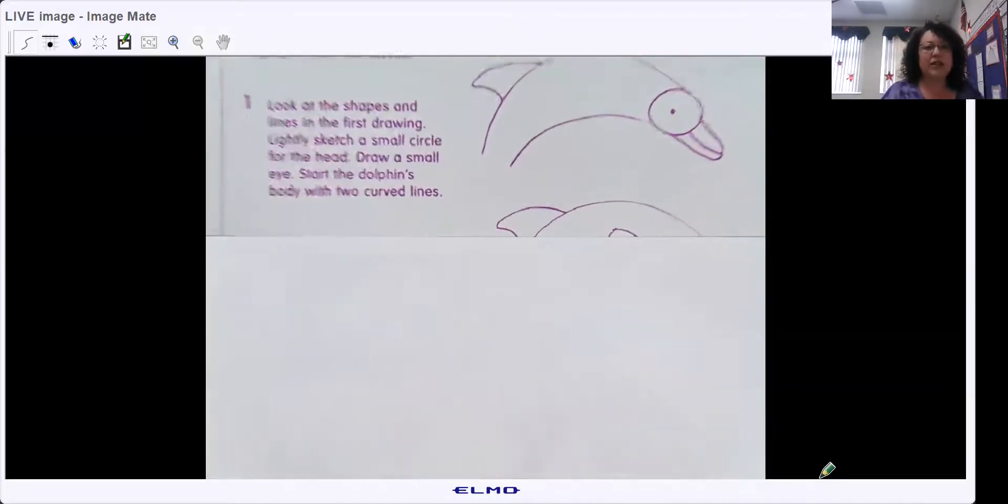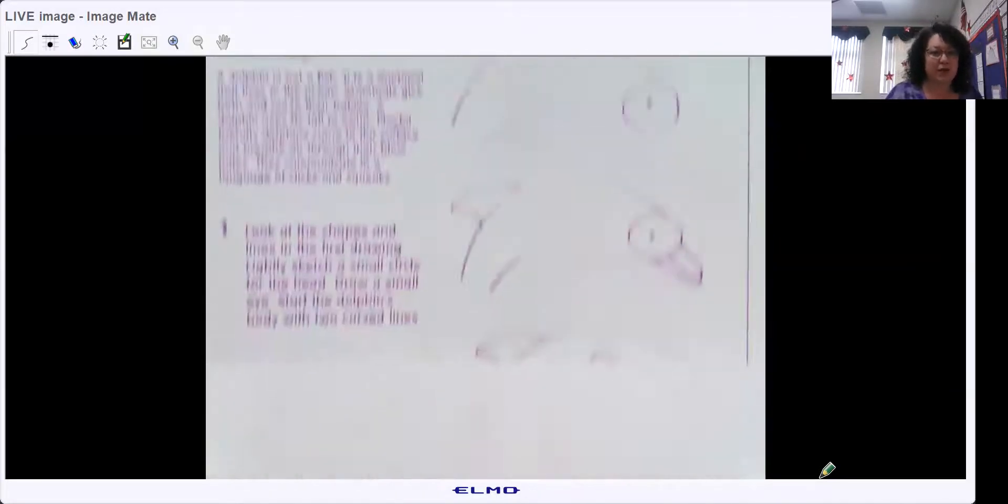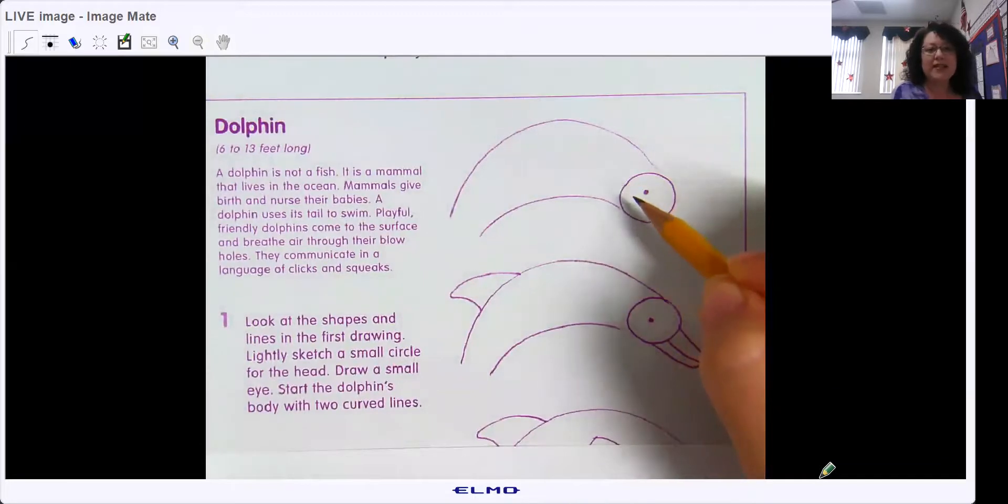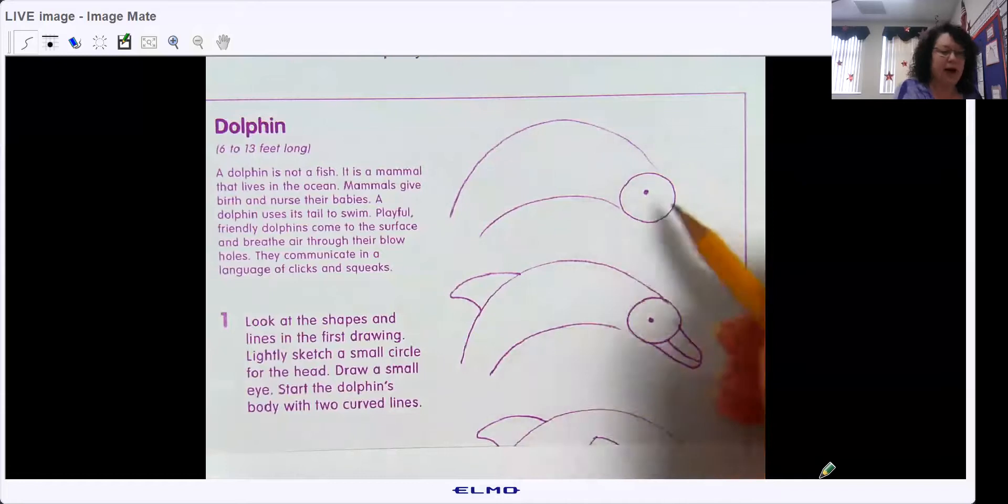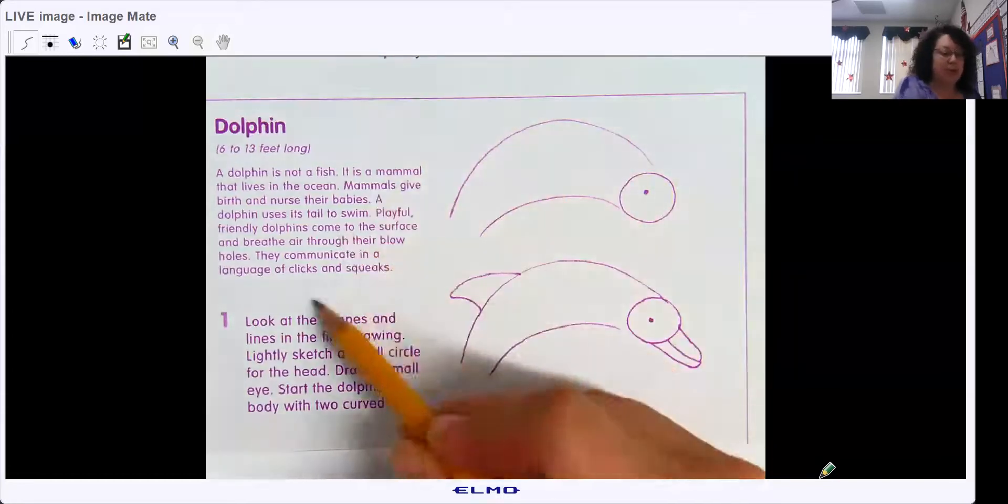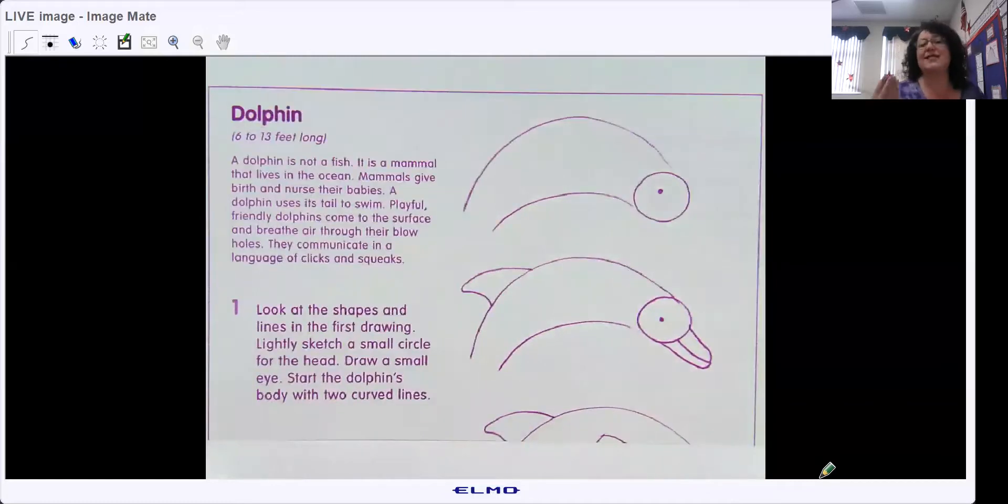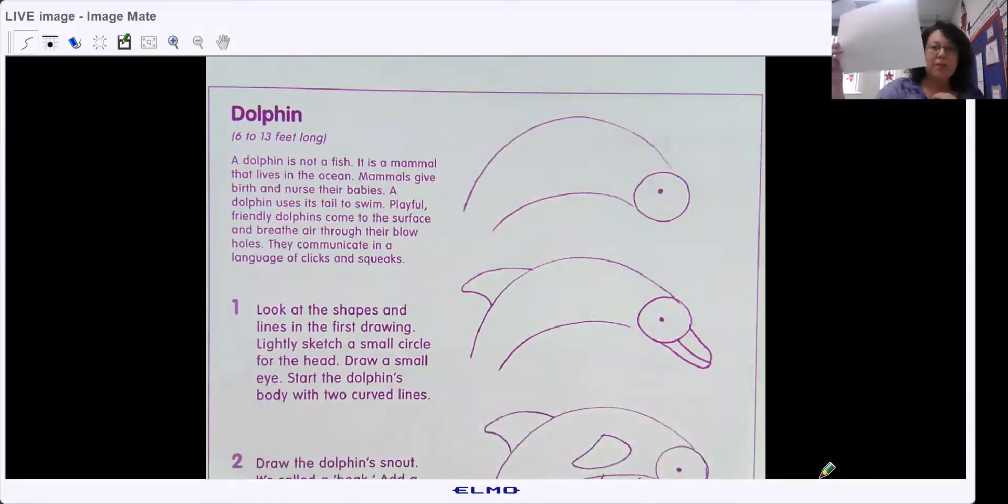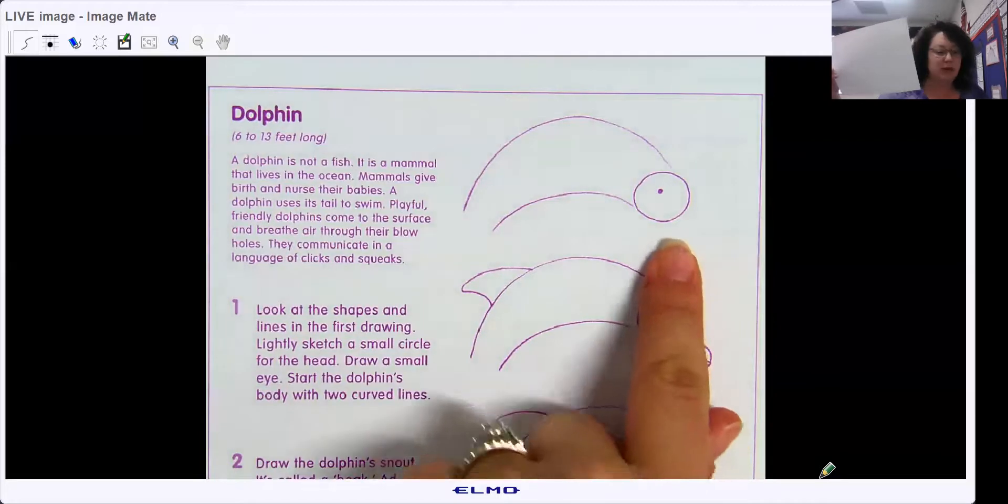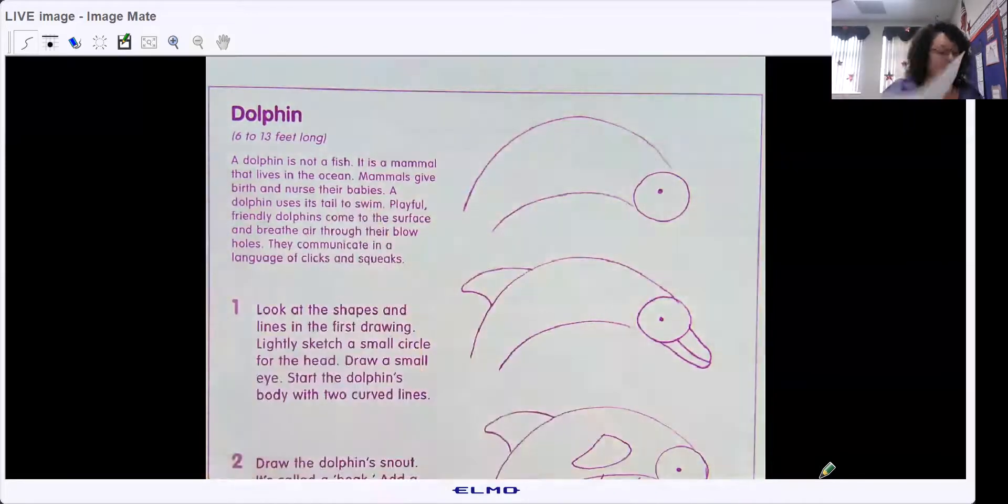Step one, look at the shapes and the lines in the first drawing. Lightly sketch a small circle for the head, draw a small eye, start the dolphin's body with two curved lines. So this is functional text because it's telling us step-by-step how to draw it. So we're going to do it together. I'm going to hold my blank sheet of paper horizontally, long ways, not vertical, long ways. So we do a circle, a dot for the eye, and the two lines.